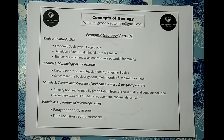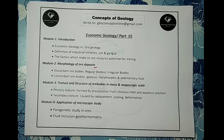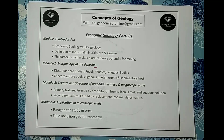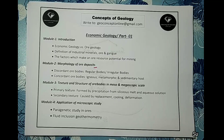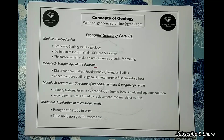Module 2 is the morphology of ore deposits — how the ore body looks in the field. The ore body may be discordant or concordant, terms you may have heard in igneous petrology. Concordant means the ore body is parallel with the fabric of the host rock. Discordant means the ore body cross-cuts the fabric of the host rock. Fabrics are planar or linear structures in a rock — such as cleavage, bedding planes, foliation planes, or lineations.